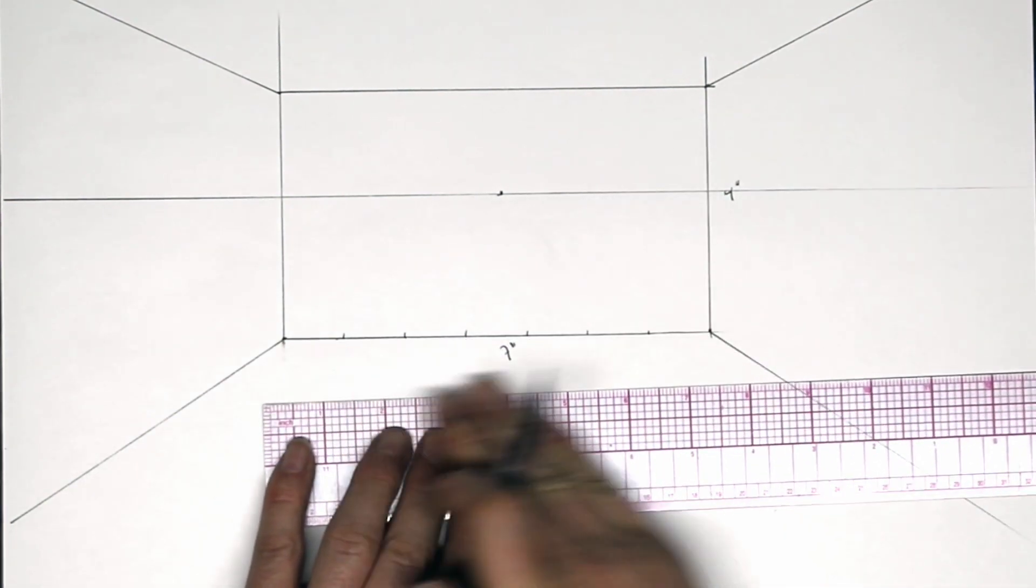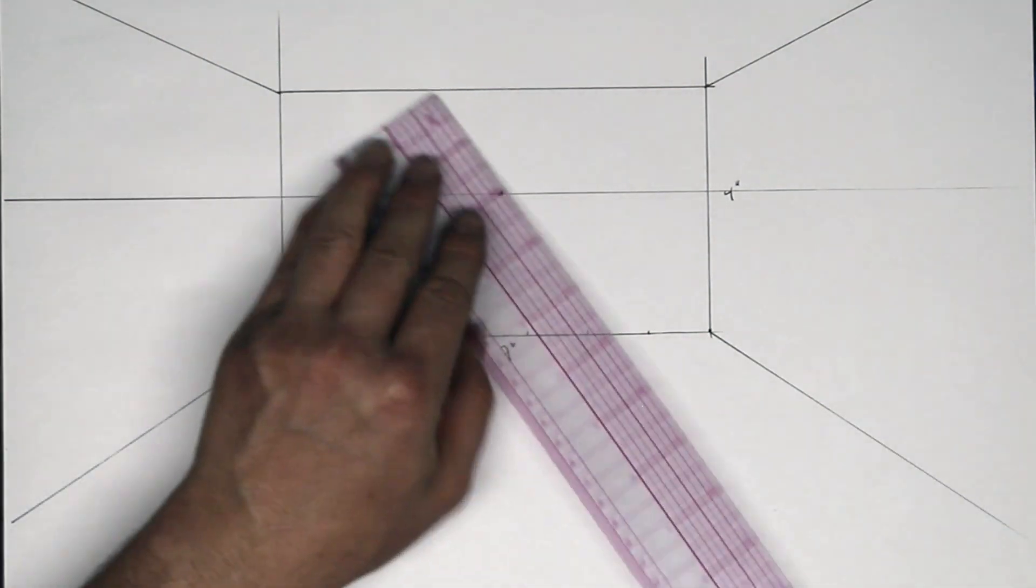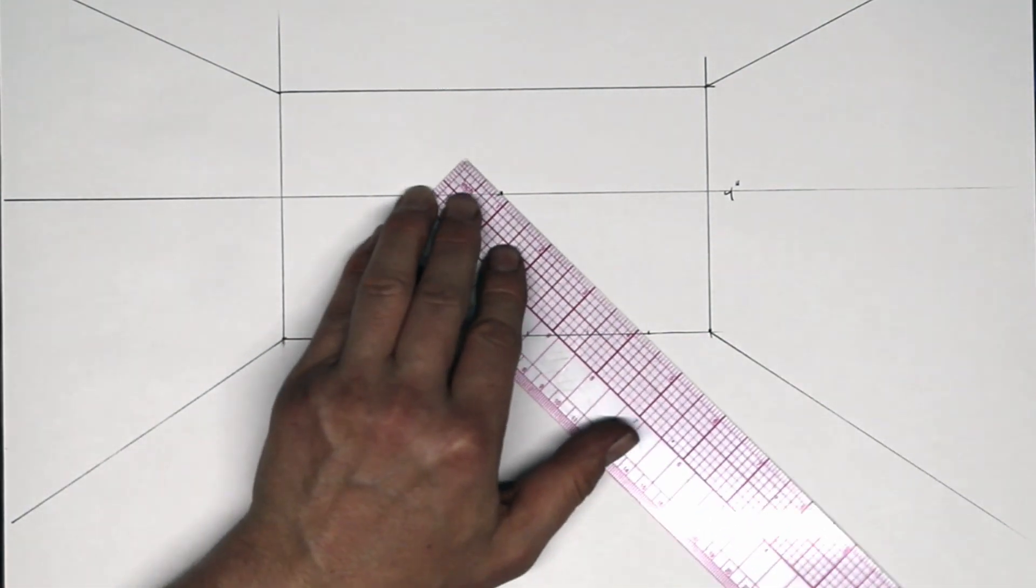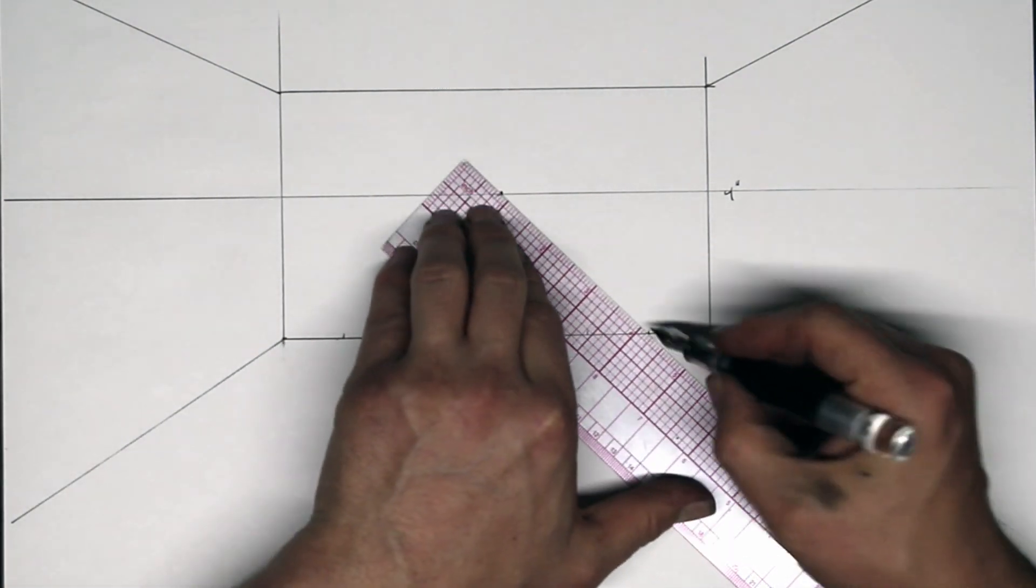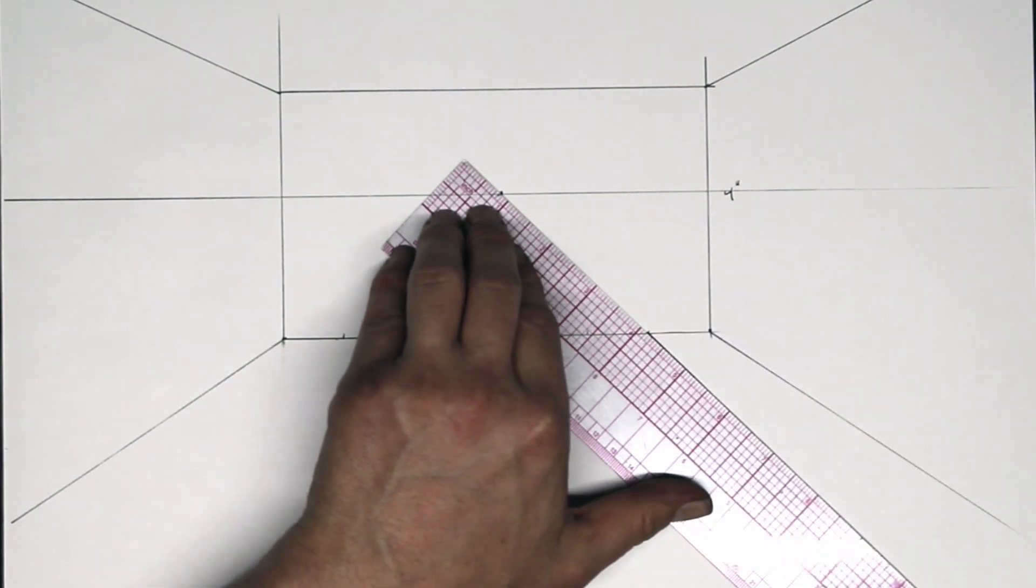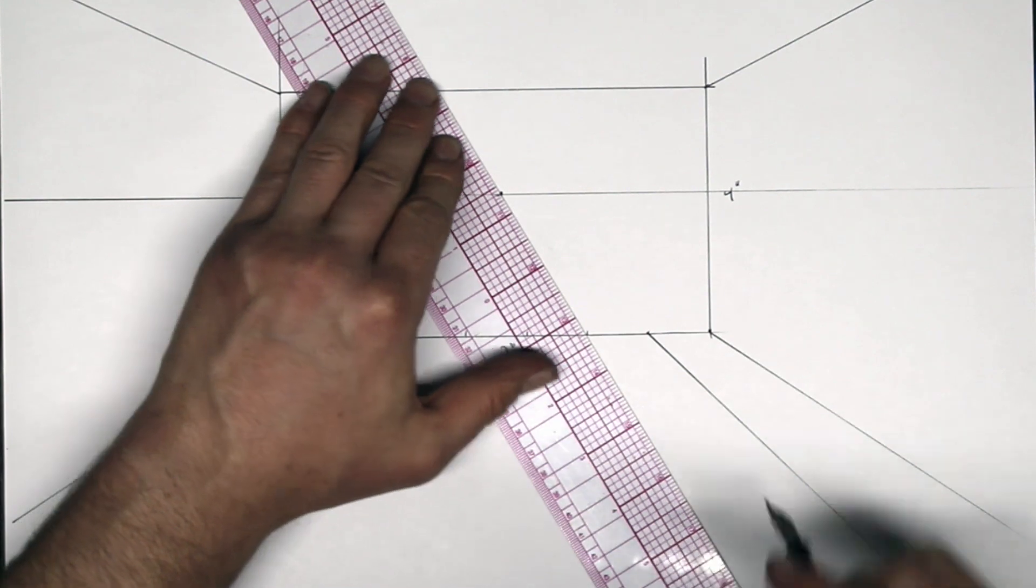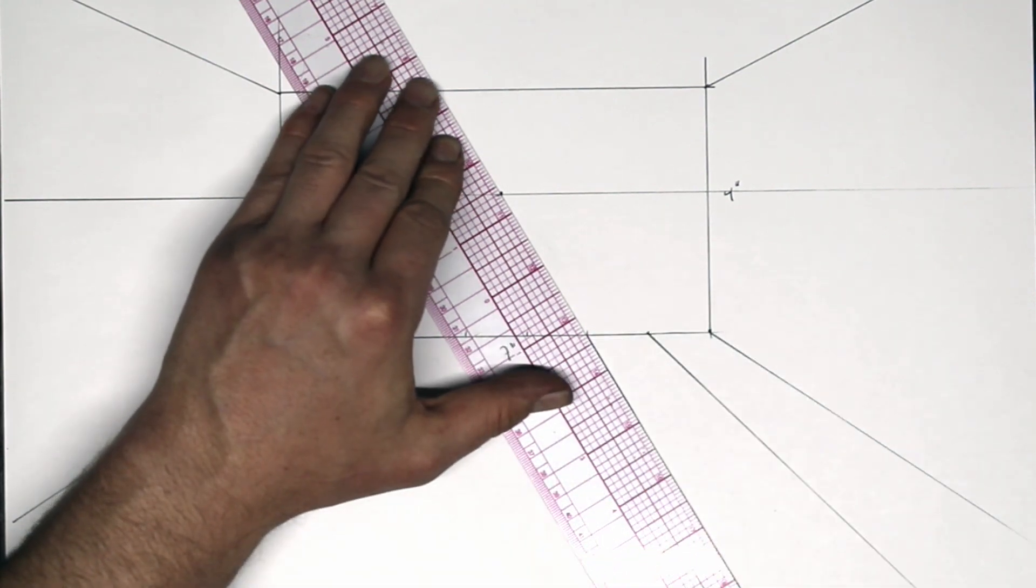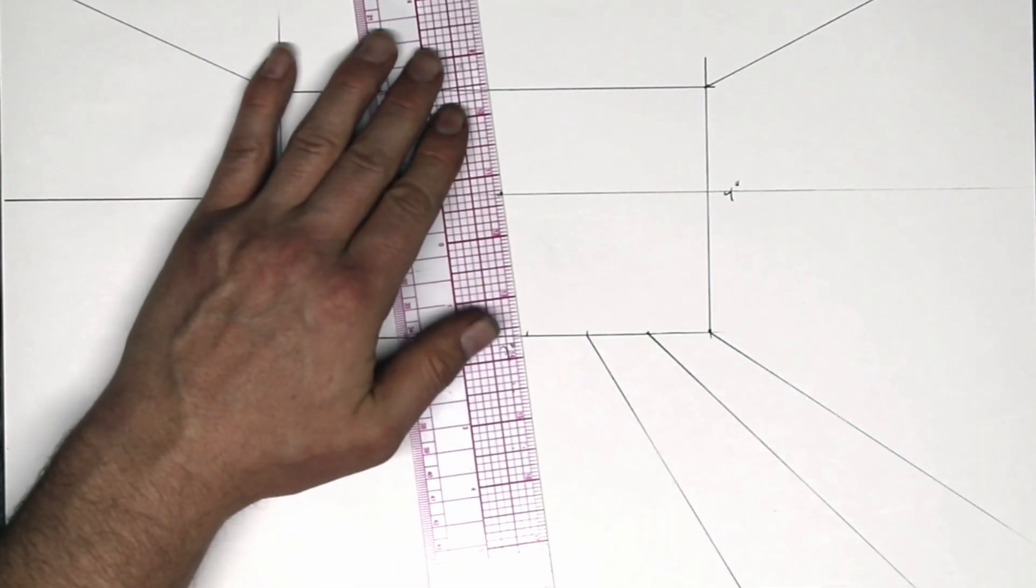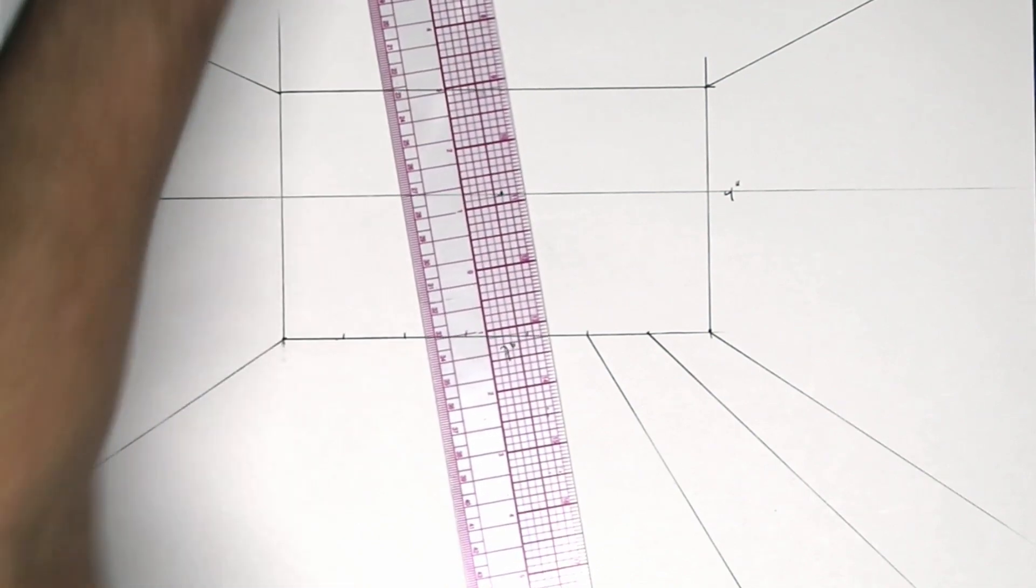And then once you have seven increments measured out, line up your ruler with your vanishing point and draw a line from each one of those increments. Try to be exact, because in this case any little inaccuracy is going to really throw you off quite a bit.